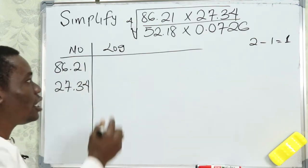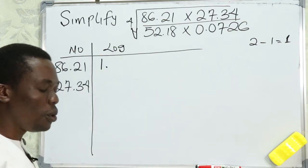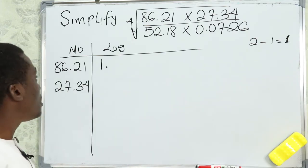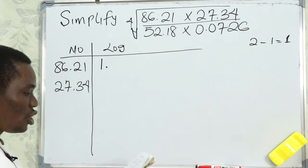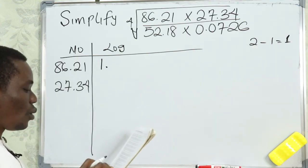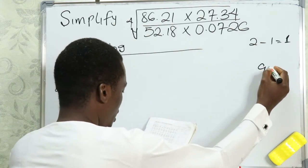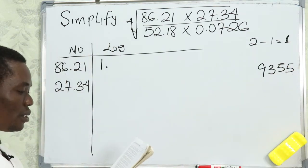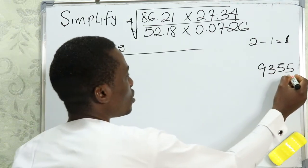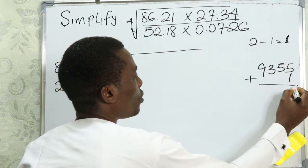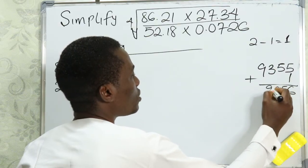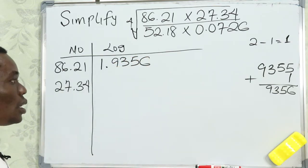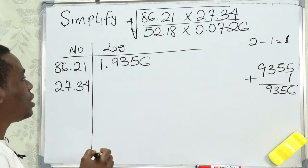Using this method, the characteristic is 1. We look up log of 86 under column 2, with a difference of 1. The log of 86 under 2 gives us 9355, and the difference of 1 gives us 6, so adding the difference gives us 9356. So we have 1.9356 for the first number.